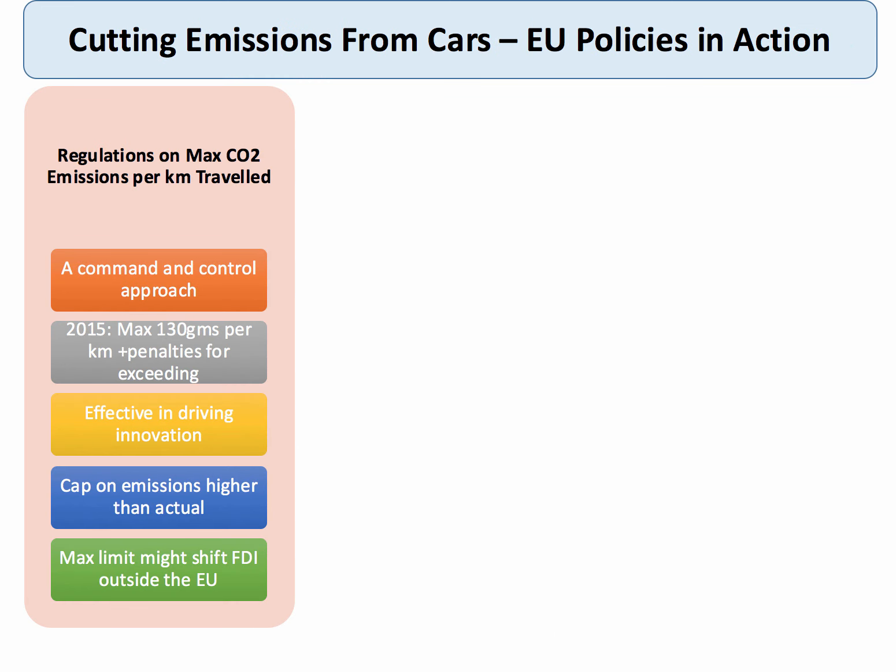Here's an example of regulations as a way of trying to cut emissions from cars. The European Union has used several policies to try and bring down emissions from vehicles — one of the biggest single causes of CO2. One of the policies has been to introduce regulations on the maximum CO2 per kilometre travelled from vehicles, and over time those regulations have become tougher. The maximum CO2 limit has been brought down — this is a command and control approach.